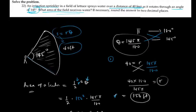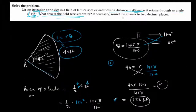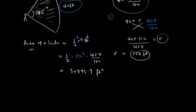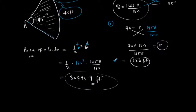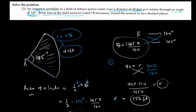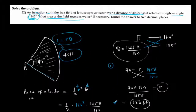The question says to leave your answer to two decimal places. The calculator gives us the answer already to a decimal place, so that's fine. So the area of the field that receives water is 30,793.9 square feet. That's going to be your solution.